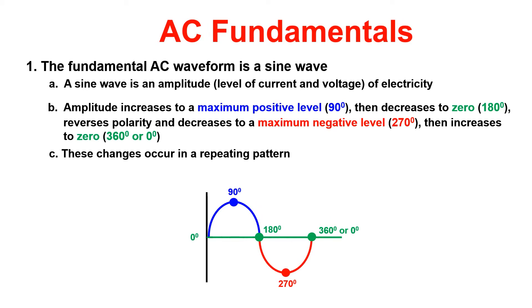Glad you asked. AC or alternating current is an electrical current that reverses its direction many times per second at regular intervals. The fundamental or basic AC waveform is a sine wave.